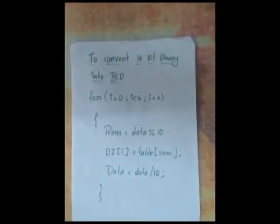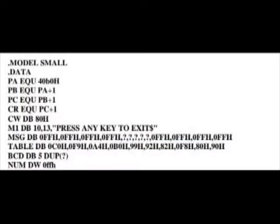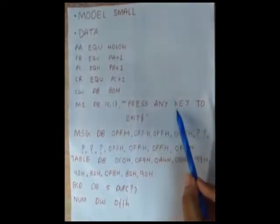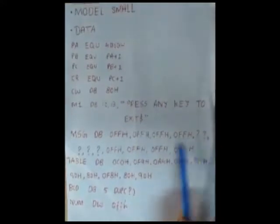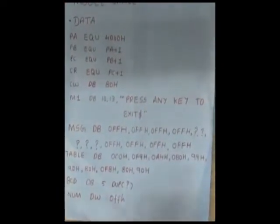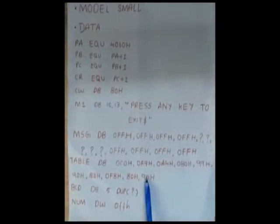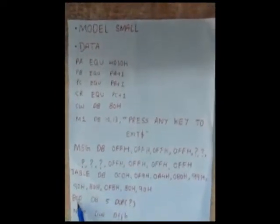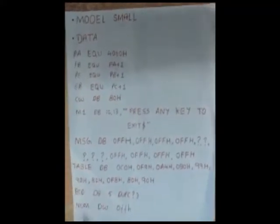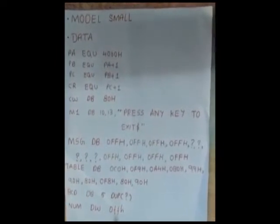Now, what should be in the data segment? We need only a small memory structure with one data and one code segment. In the data segment, let's initialize the hardware kit port A to 40B0 and all other ports corresponding to it. The control word will have the value ATH as we are only displaying output on the hardware kit. For the user interface, let's take the message as 'press any key to exit' in M1, and the output message with spaces to store the BCD values bounded by 4FFH for displaying. We also need a table of 10 codes to indicate 0 to 9, an array of 5 to store the resulting BCD, and num will have the input data — in our case, 0FFH.